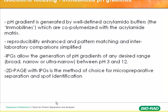The pH gradient is generated by well-defined acrylamide buffers, and these buffers contain immobilines — I will introduce the chemicals — which are co-polymerized with acrylamide, so they're fixed in a gel. These immobilines generate the pH gradient in a gel.